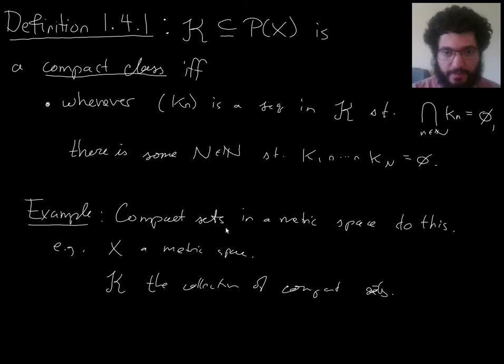But there is a reason for the word compact showing up there, which is one of the main examples. If x were a metric space, then compact sets in x would actually do this. Let x be a metric space, and then let fancy k be the collection of all compact sets. Then k would be a compact class.